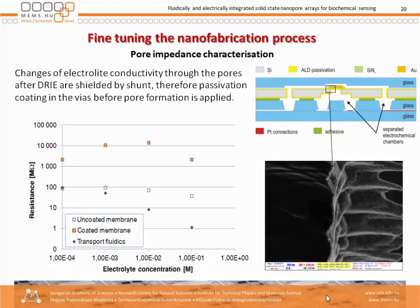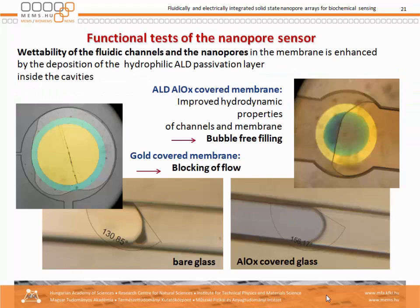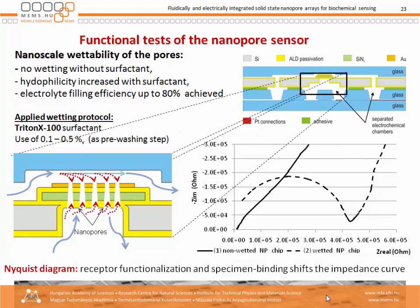However, we have to address many electrical parasitic effects in order not to get shunting of the signal by conduction alongside the pore walls and the surface. One of the major problems in nanopores is how to get liquid in — we have to use some surfactants. This demonstrates that both in the piping of the microfluidics and within the nanopore with the gold-coated surface, we get much better wettability when using surfactants.